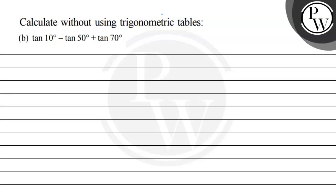Hello Bacho, let's see this question. The question says: calculate without using trigonometric tables. The question is tan(10°) - tan(50°) + tan(70°).